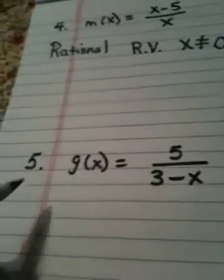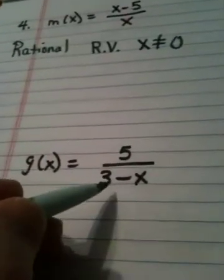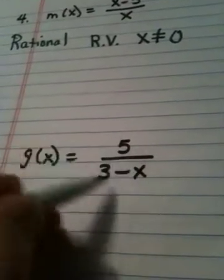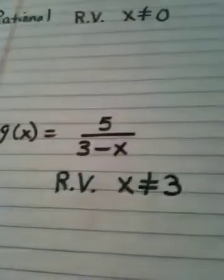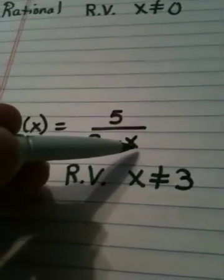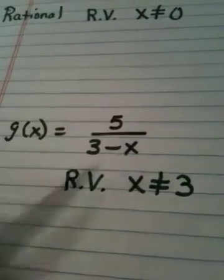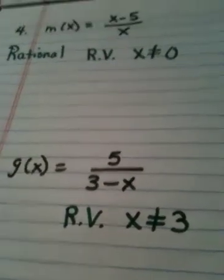In problem number five, the denominator is 3 minus x. This is also a rational function. When you state restricted values here, x cannot be 3, right? Because if you put in the number three, this denominator would then become zero, and you would be dividing by zero.